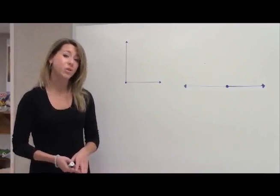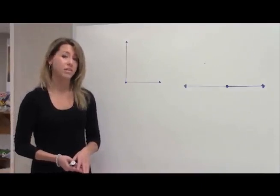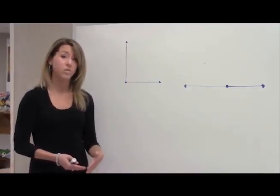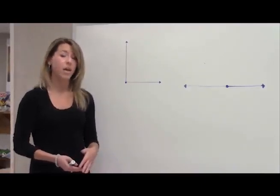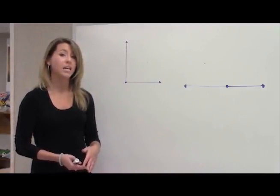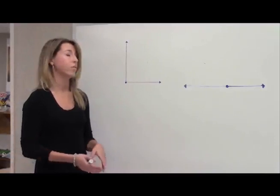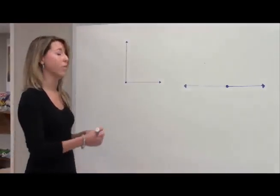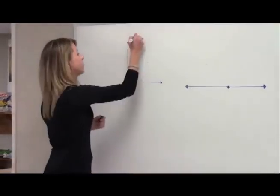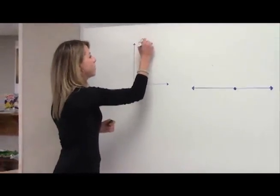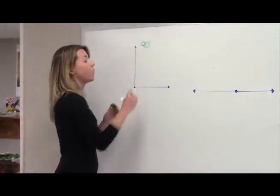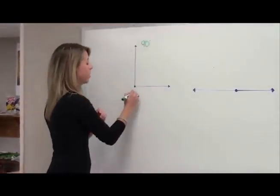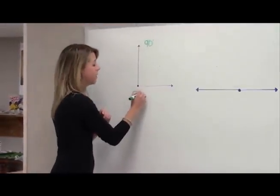So we have two adjacent angles, or angles that are next to each other, and they form a 90 degree angle like this, which is also called a right angle. We say those angles are complementary.